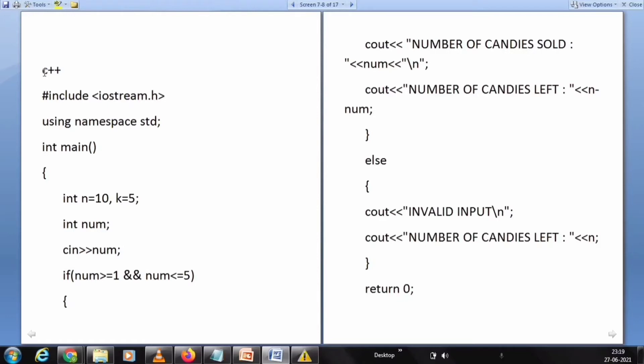We can see the program for the same in C++. That is, hash include iostream.h using namespace std. Int main, n equals 10 and k equals 5, and the remaining is the same as the C language program.